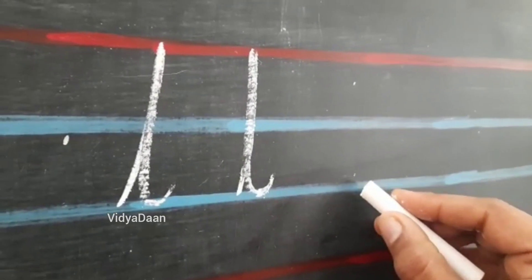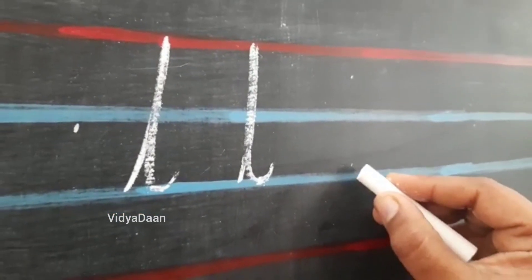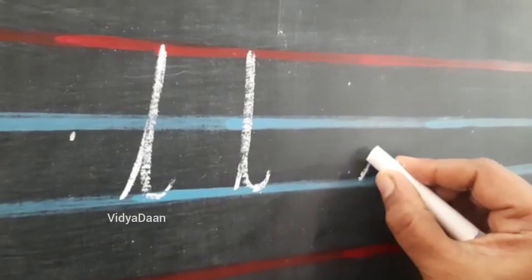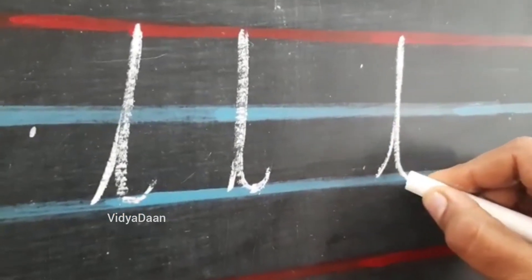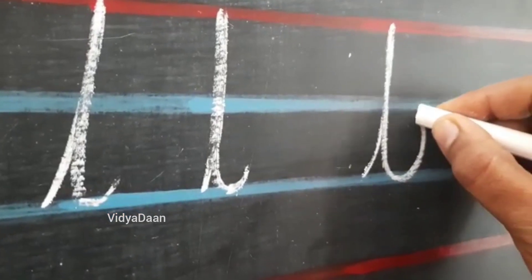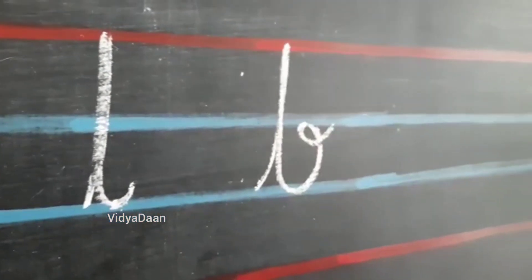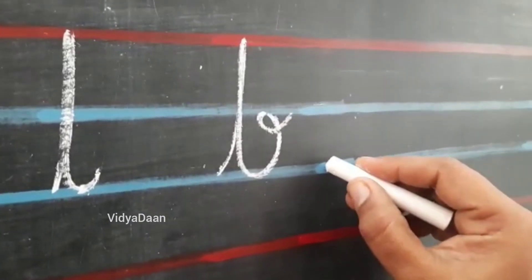In the same way, we are going to write letter B. See, from the baseline again starting, come back to the baseline. But this time, I turn to the middle line like this. See once again.